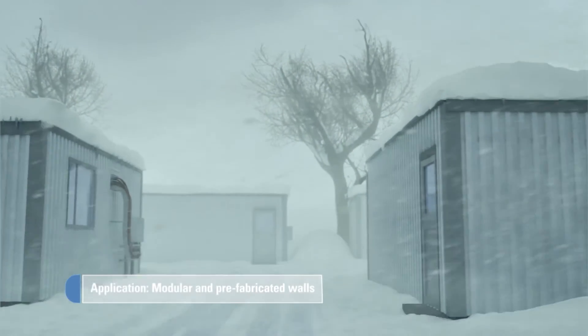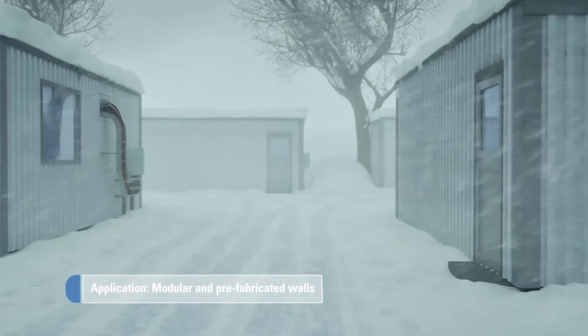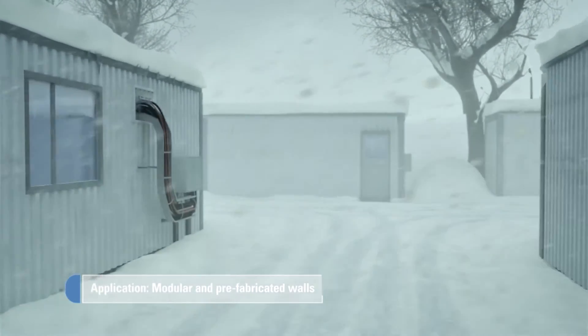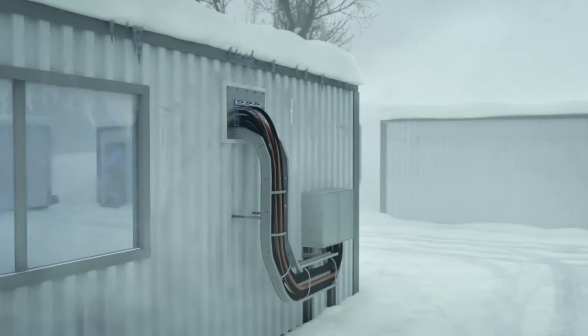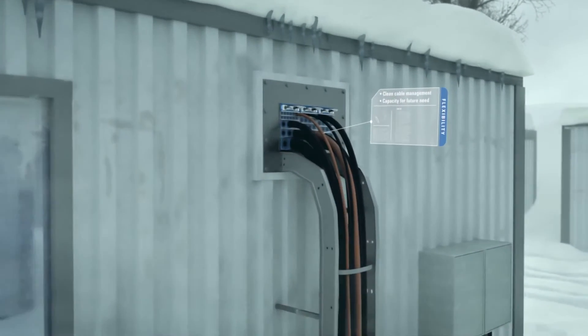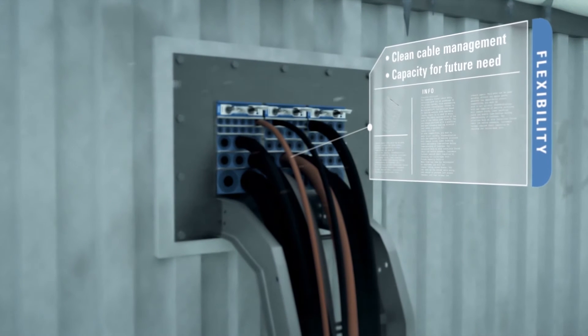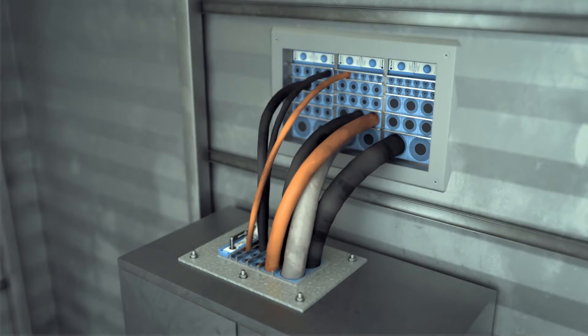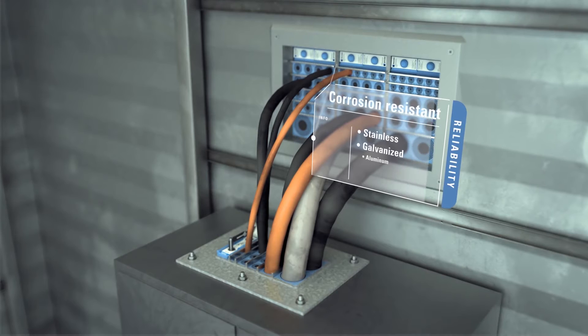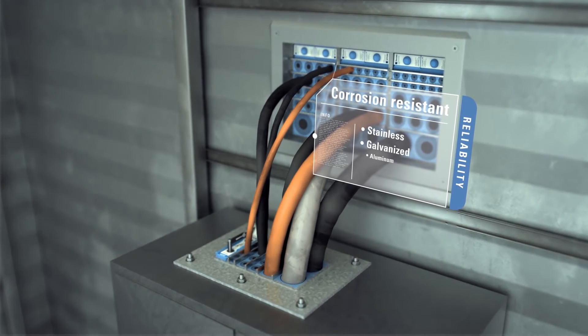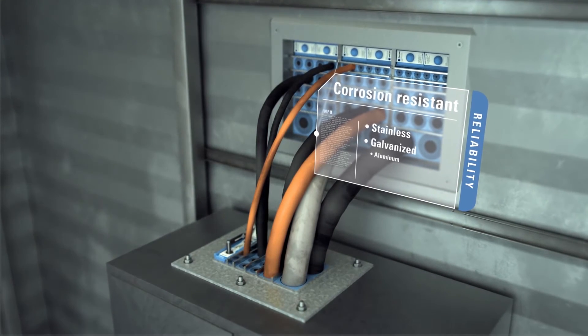You can also use Rockstex solutions in modular and prefabricated walls. The seals manage cables in a neat and area-efficient way and also provide built-in spare capacity for upgrades. Rockstex components are available in many different materials to meet regulations and environmental needs.